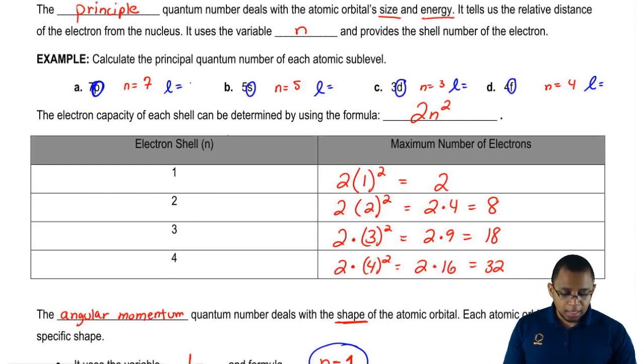So if it's P, L is 1. If it's S, L is 0. If it's D, L is 2. If it's F, L is 3.